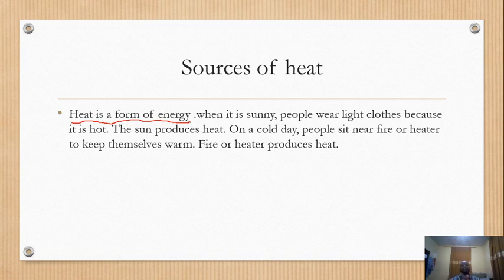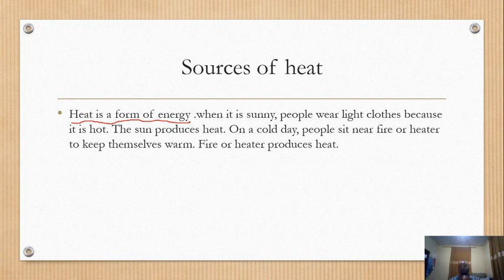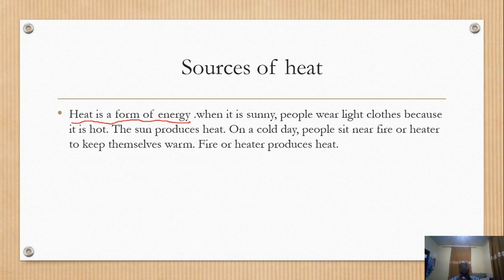You learned about the natural and artificial sources of light and the uses of light. Today we start heat. By definition, heat is a form of energy. When it is sunny — and most days recently it's quite hot — people wear light clothes because the sun produces heat.